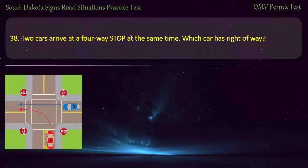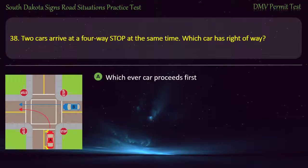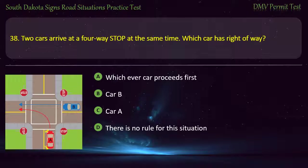Question 38: Two cars arrive at a four-way stop at the same time. Which car has right-of-way? Options: Whichever car proceeds first; Car B; Car A; There is no rule for this situation. Answer: Car B.